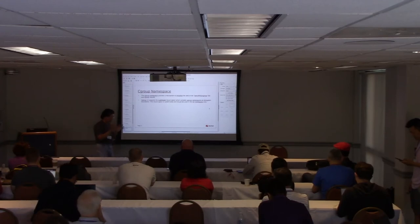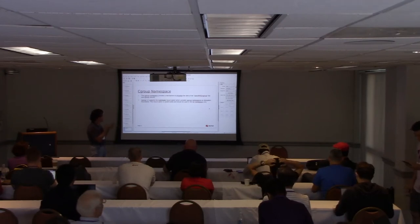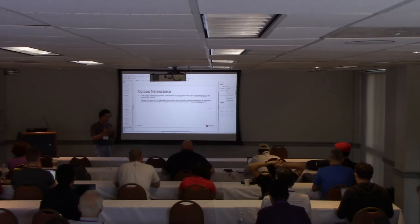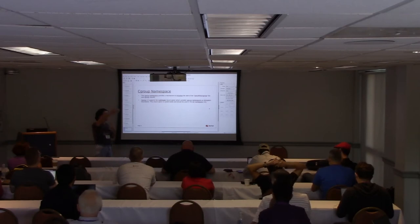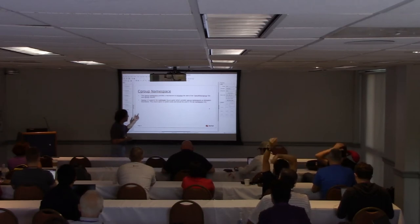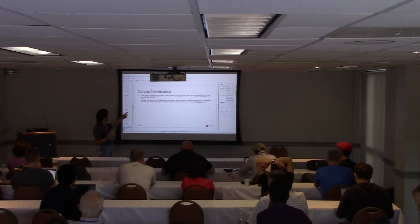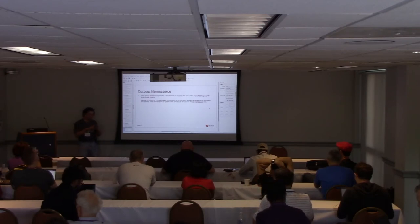cgroup namespace provides a mechanism to virtualize what a process can see in the cgroup hierarchy. If you are in a container, you don't want it to see other cgroup trees above its level, so you can use cgroup namespace to accomplish that. cgroup namespace is also used for the delegation mechanism, allowing you to delegate the maintenance of a particular namespace to a non-root process.